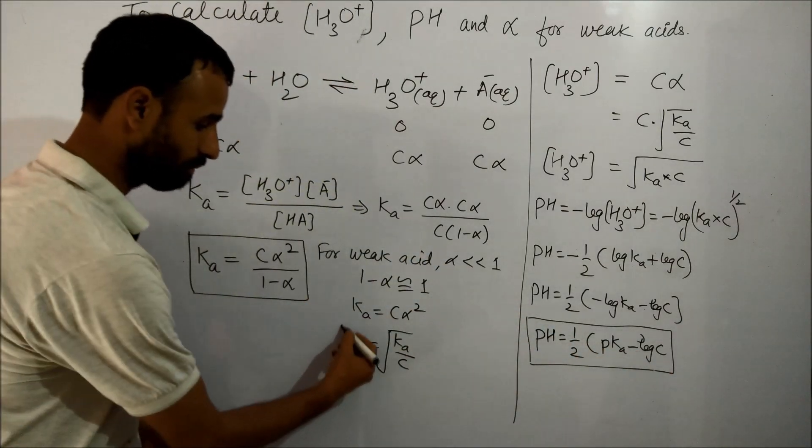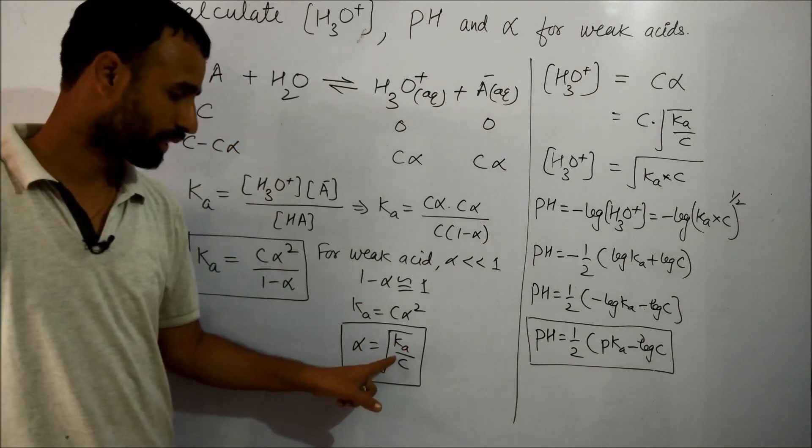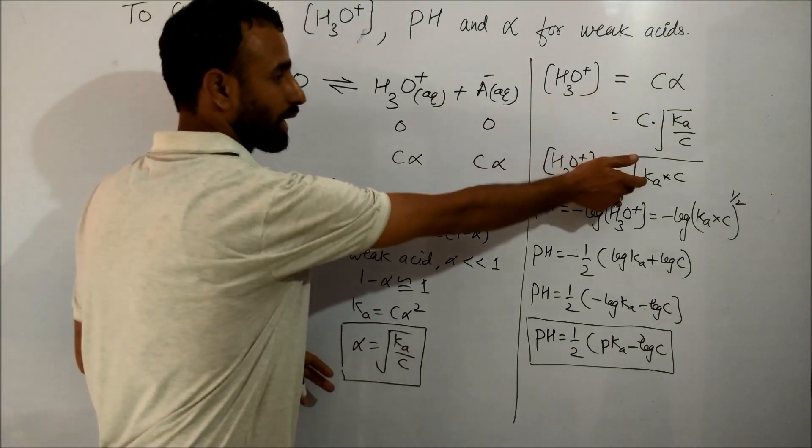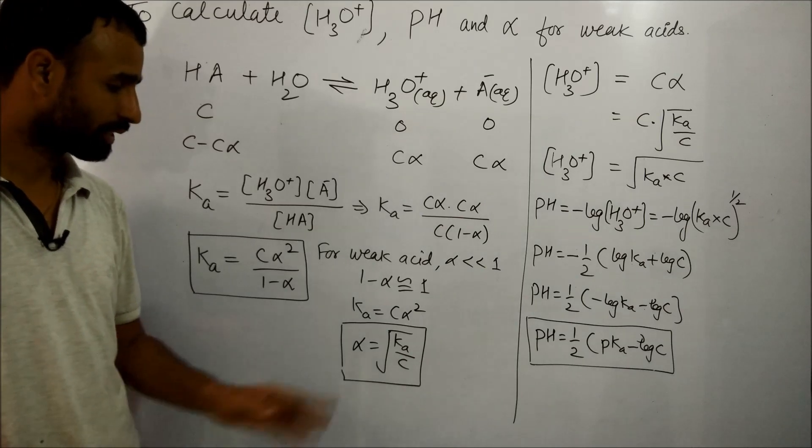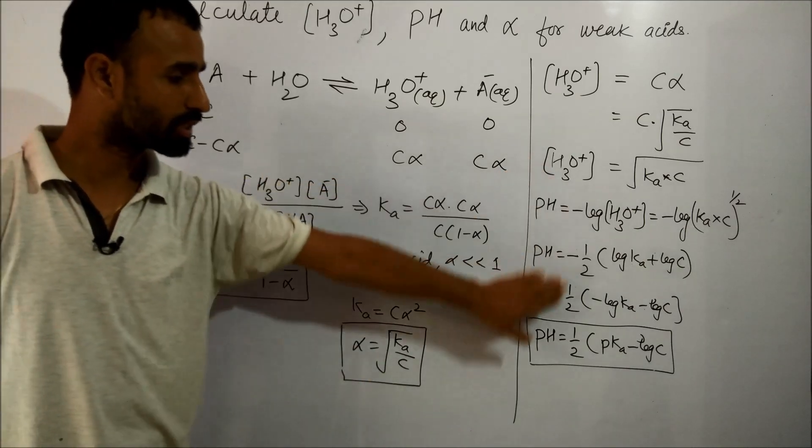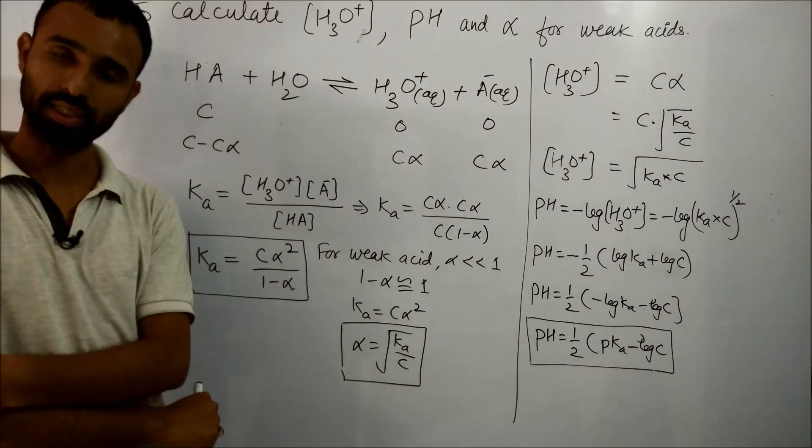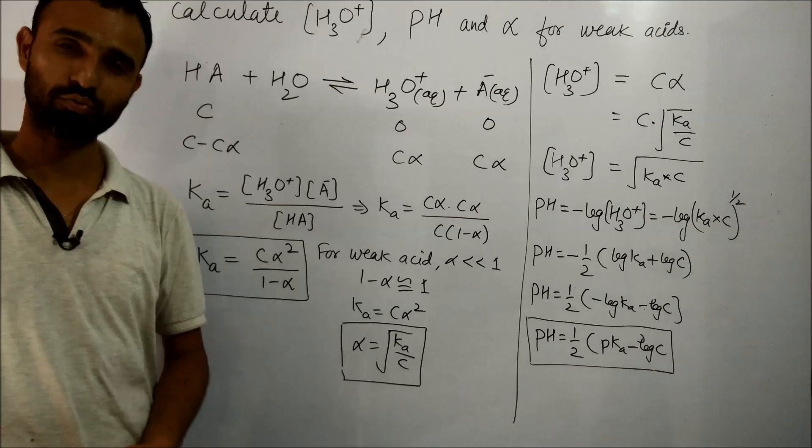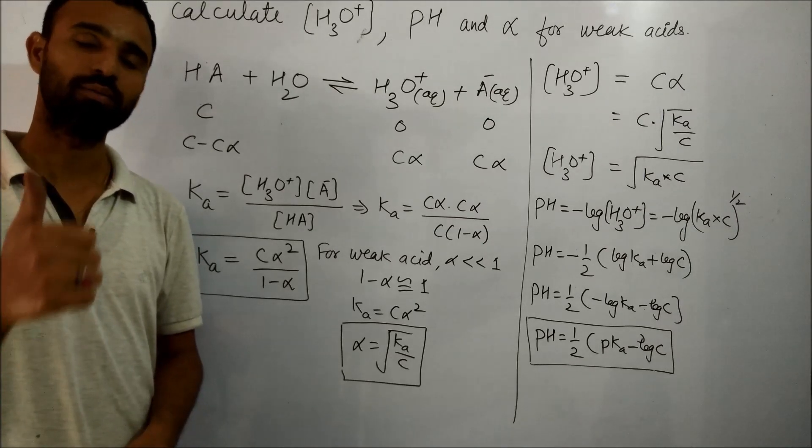Or you can calculate alpha by using this relation: square root of Ka over square root of C. These expressions can be used to calculate alpha, [H3O+], and pH in case of weak acids for numerical purposes. Thank you very much for watching this video. Do press thumbs up button if you like it and subscribe to my channel.